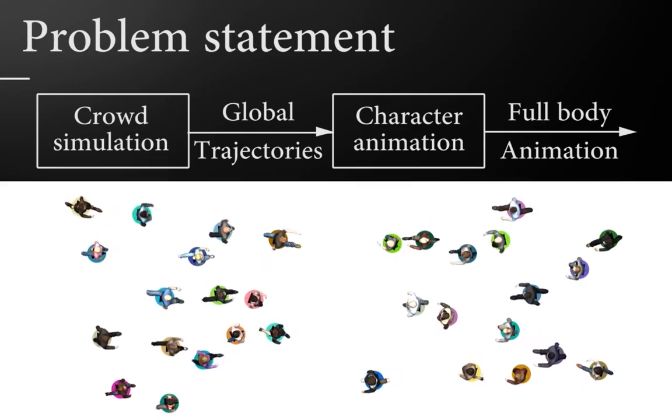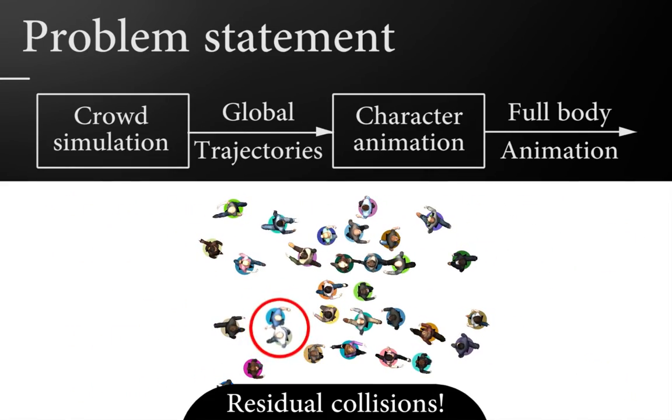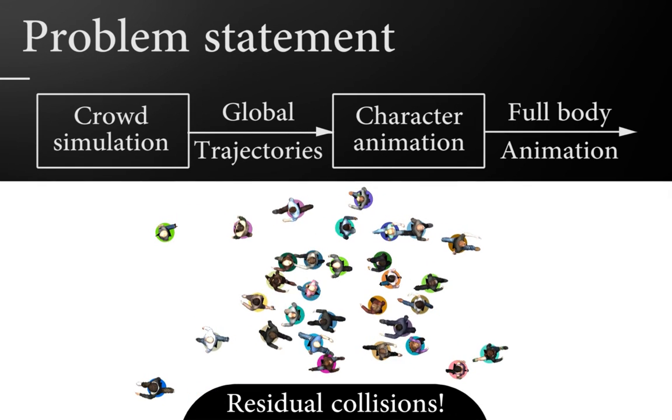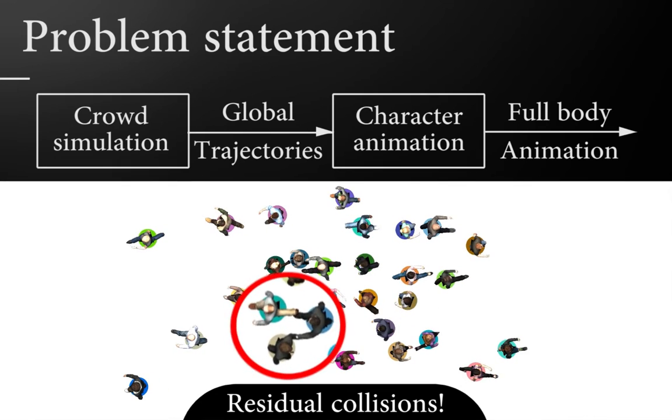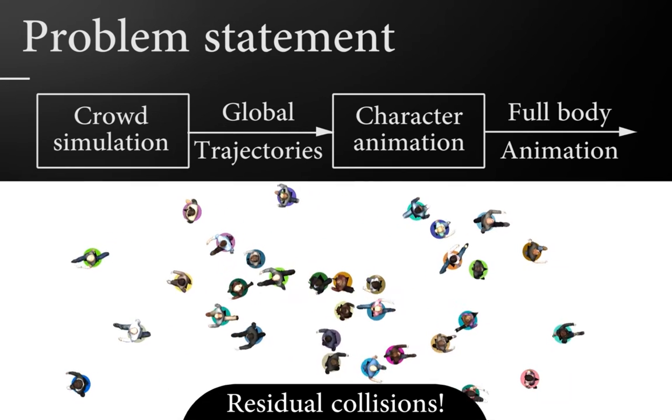The second stage consists in animating the internal joints of characters and generating full body motions following the global trajectories. Since the radius of the cylinders must be small enough to allow the simulation of dense crowds, shoulders and limbs may collide as illustrated in this example.